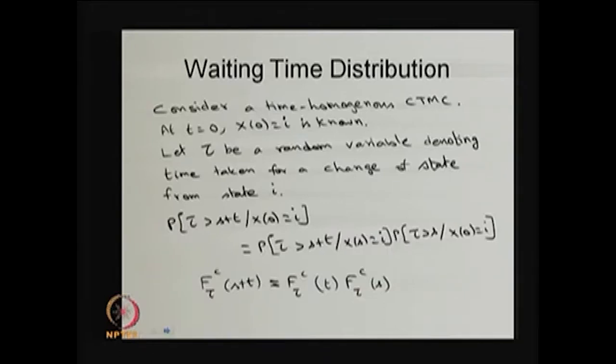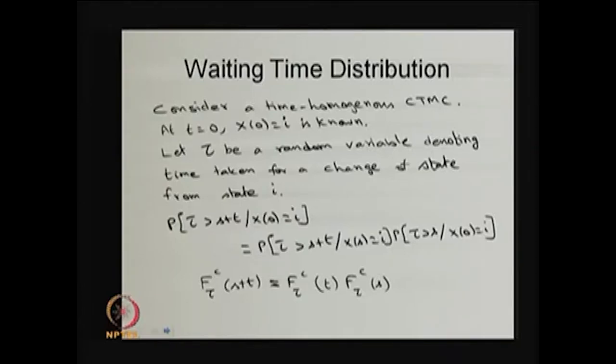I assume that at time 0 the system was in state i, that means x(0) = i, and that probability is 1. Let me define the random variable tau, denoting the time taken for a change of state from state i. Change of state means it does not matter which state it goes to — my interest is to find out the waiting time distribution for state i, that is, the time spent in state i.